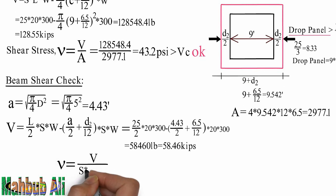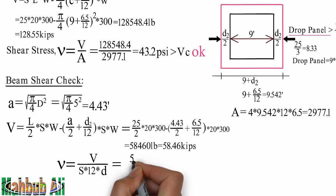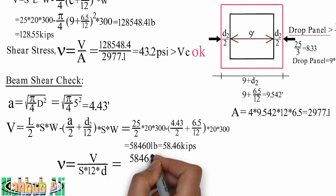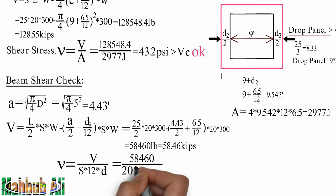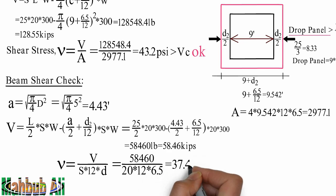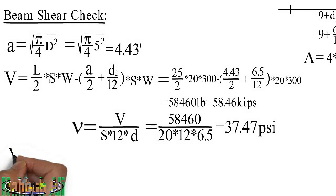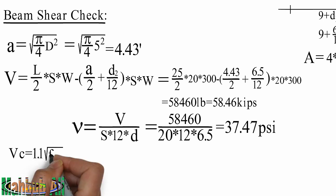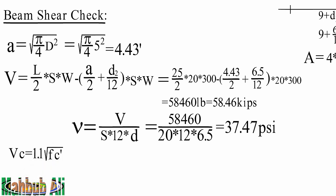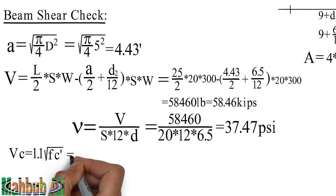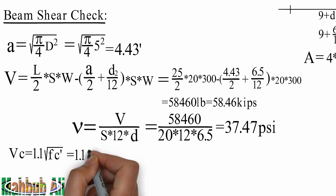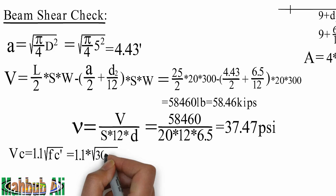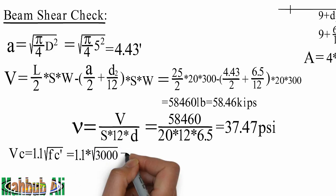V equal l divided by s into 12 into d. Vc equal l divided by 1.1 root over fc prime.